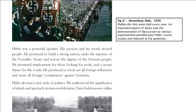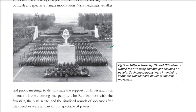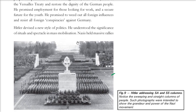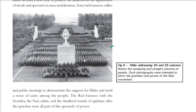It was a new style of politics. The Nuremberg rally in 1936 showed massive crowds gathered for their message. Hitler addressed the SA and SS in organized, planned ways. He understood the significance of rituals and spectacle in mobilizing the masses. They held massive rallies demonstrating support for Hitler. The red banners with swastikas, the Nazi salute, and ritualized rounds of applause after speeches were all shows of Hitler's power.